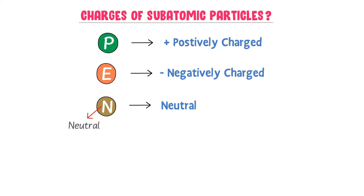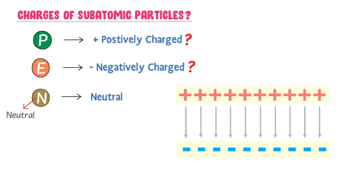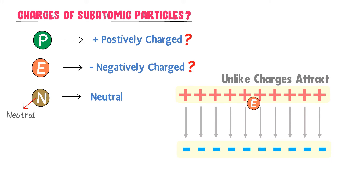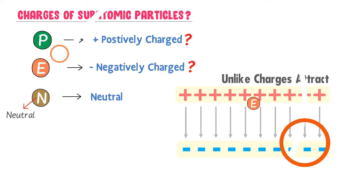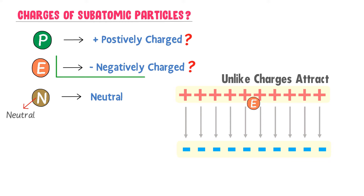Here is a bonus concept. How do we know that electrons are negatively charged and protons are positively charged? Consider two plates — a positively charged plate, a negatively charged plate, and an electric field between them. When we place an electron inside the electric field, we observe that the electron always moves towards the positive plate. Since unlike charges attract, the electron must be negatively charged. Thus, the electron is a negatively charged particle.